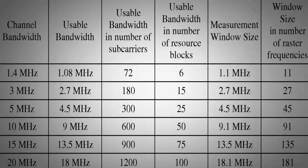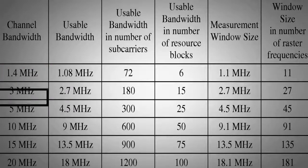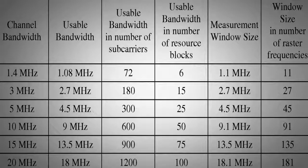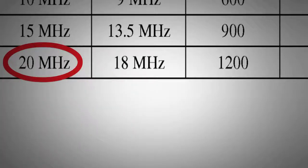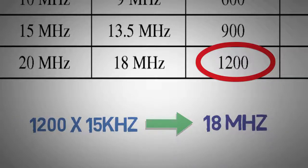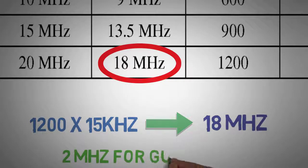Unlike in GSM or UMTS, LTE supports variable bandwidth as shown in the table. As the bandwidth increases so does the number of sub-carriers in it. Let's take for example, LTE bandwidth of 20 megahertz, which has 1,200 sub-carriers and thus a sub-carrier bandwidth of 18 megahertz. 2 megahertz used as guard band.